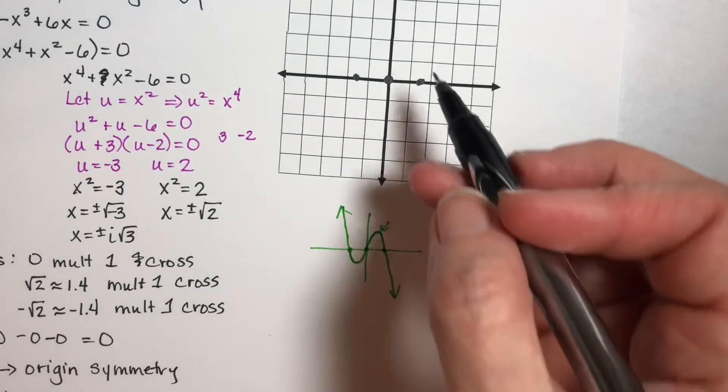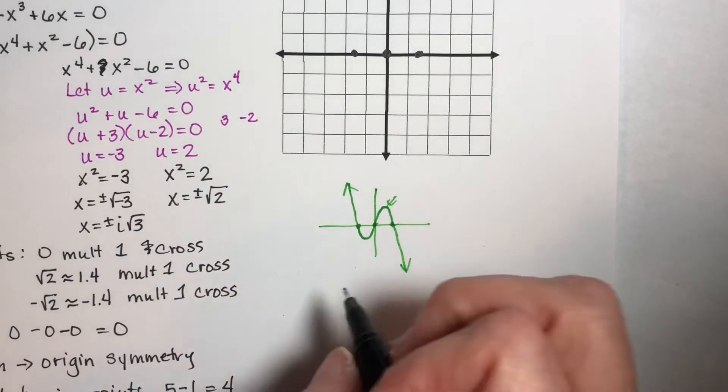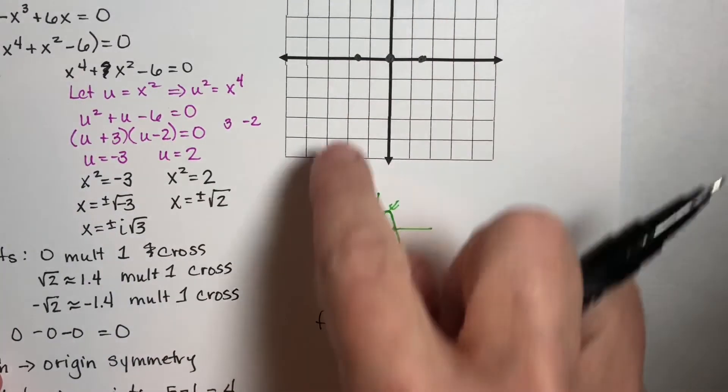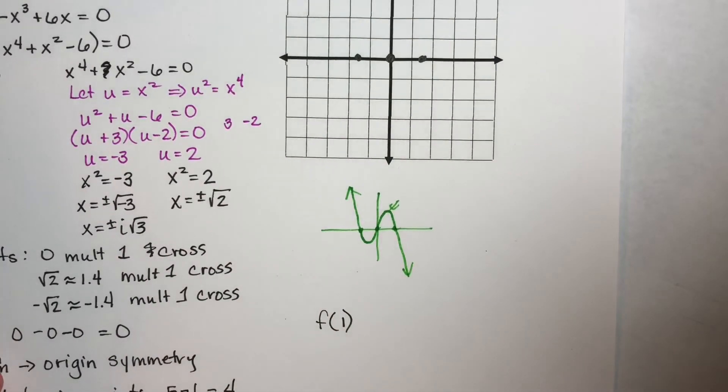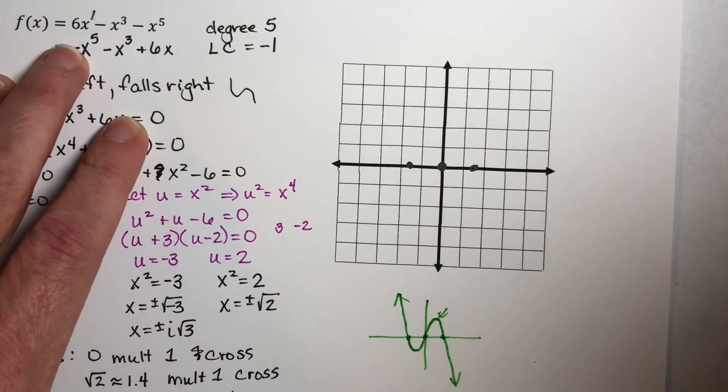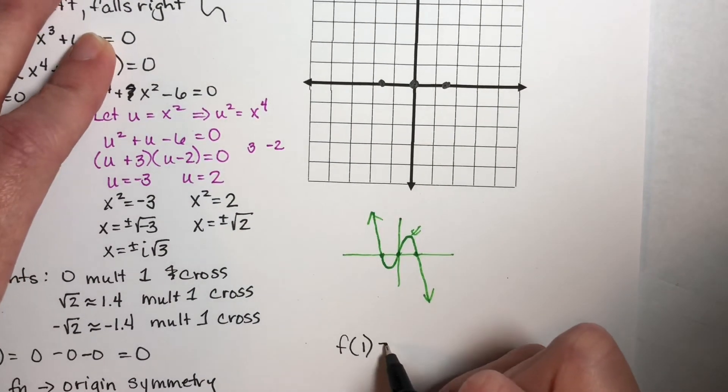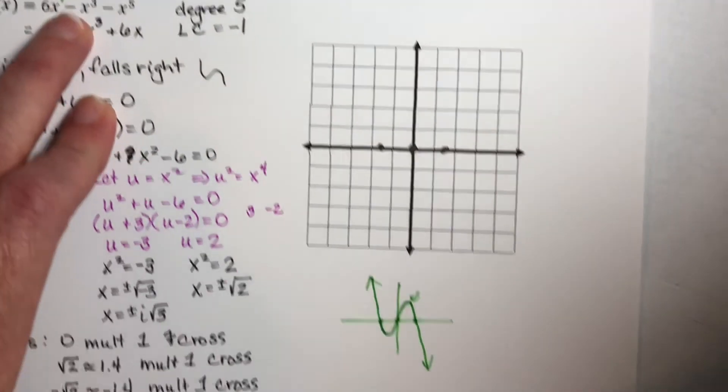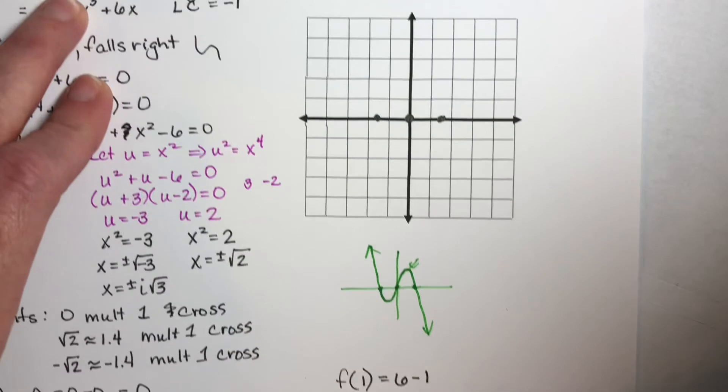I'm going to find f of 1. So if I plug in 1, it will give me an idea how far up this bump goes right here. If I plug in a 1 right here, I have 6 times 1, which is 6, minus 1 cubed, which is minus 1.